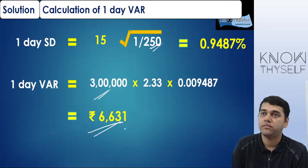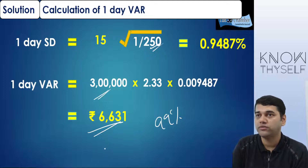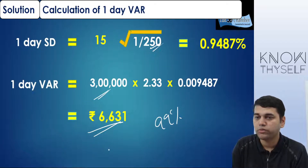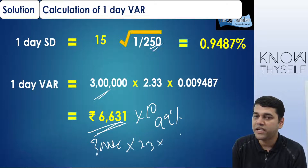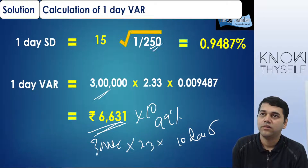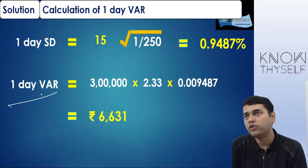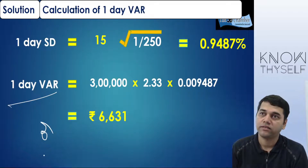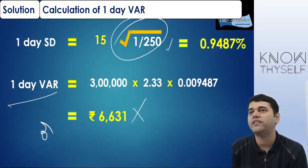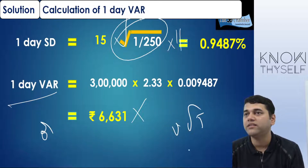In 10 days, how much maximum might you lose? You cannot do 6,631 × 10. Again, you have to do 3 lakh × 2.33 × 10-day standard deviation. Standard deviation is never calculated as a simple 1 × (1/250). Standard deviation is always found out as σ × √t. So the maximum loss: in one day is 6,631 with 99% confidence. That is this particular one day VAR.